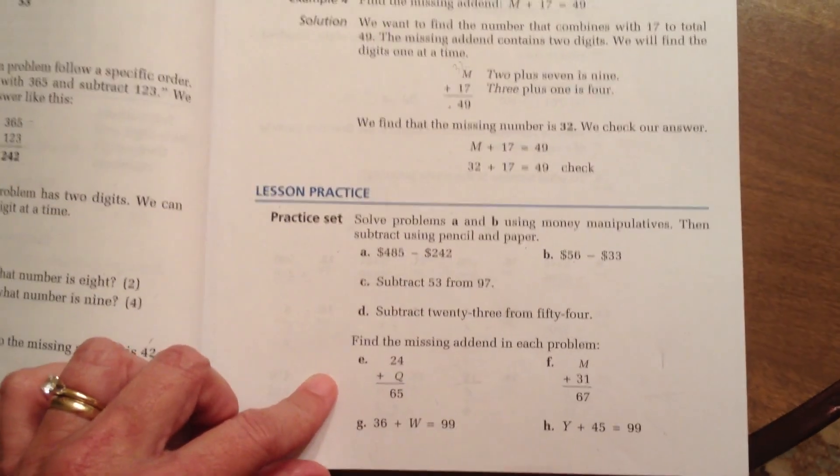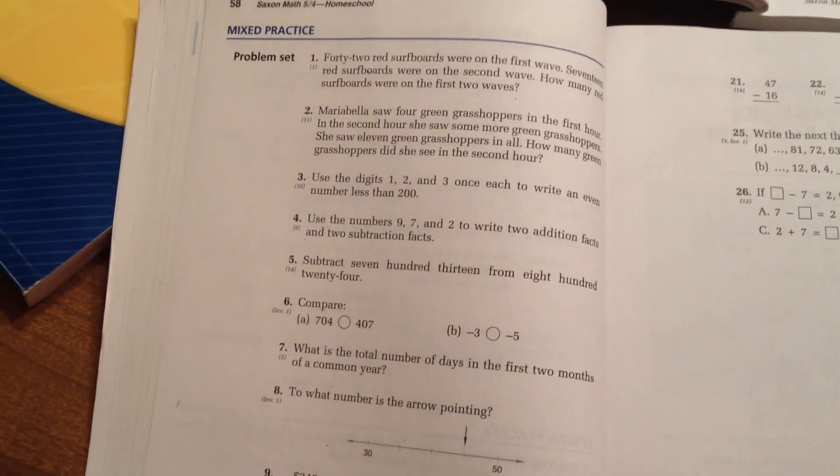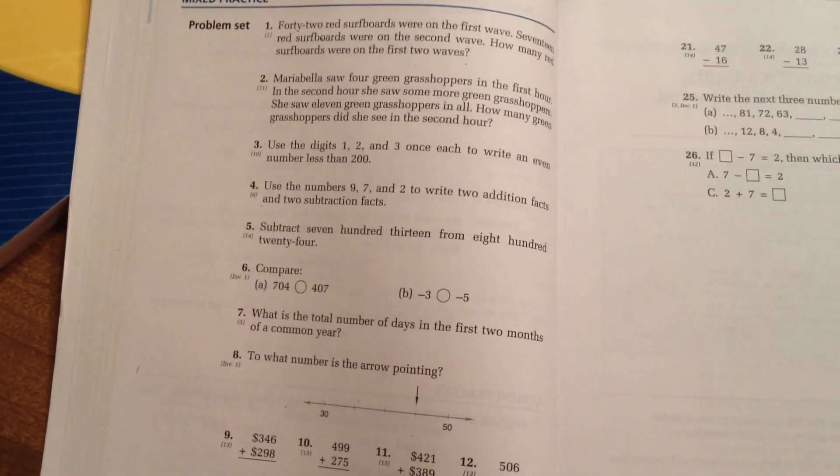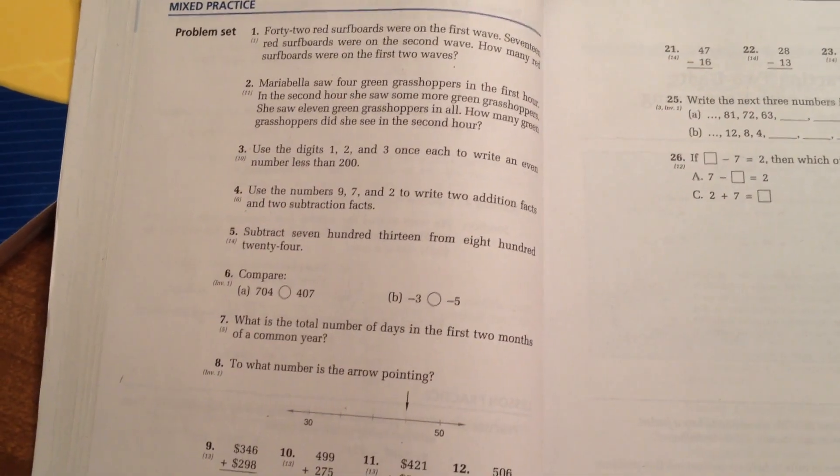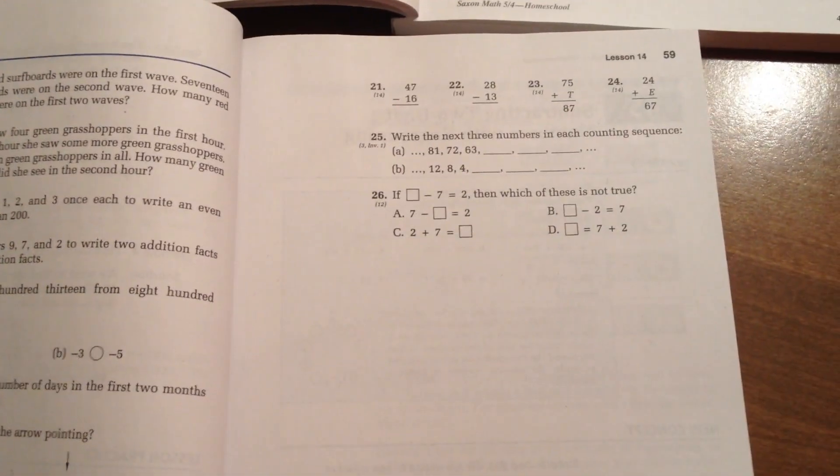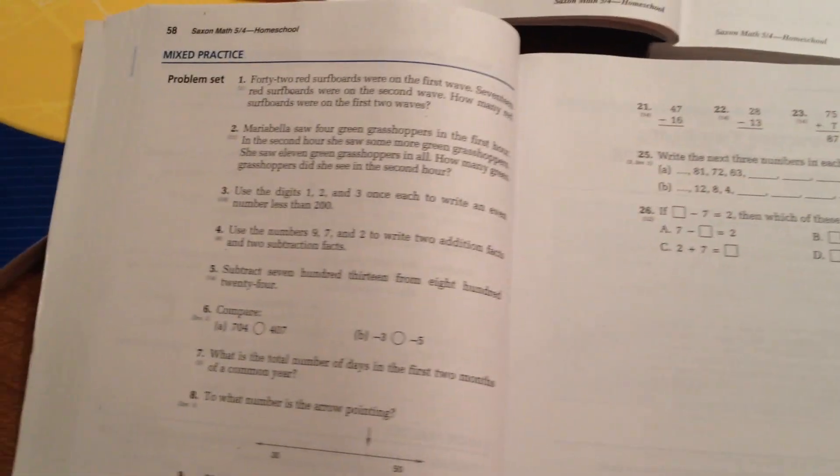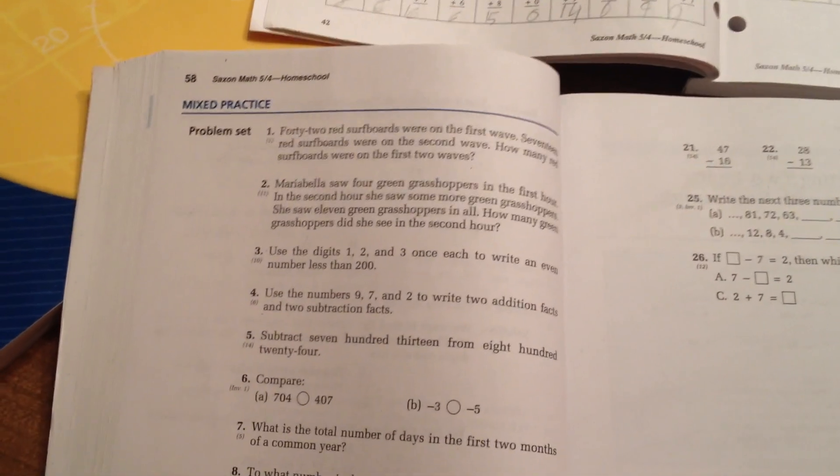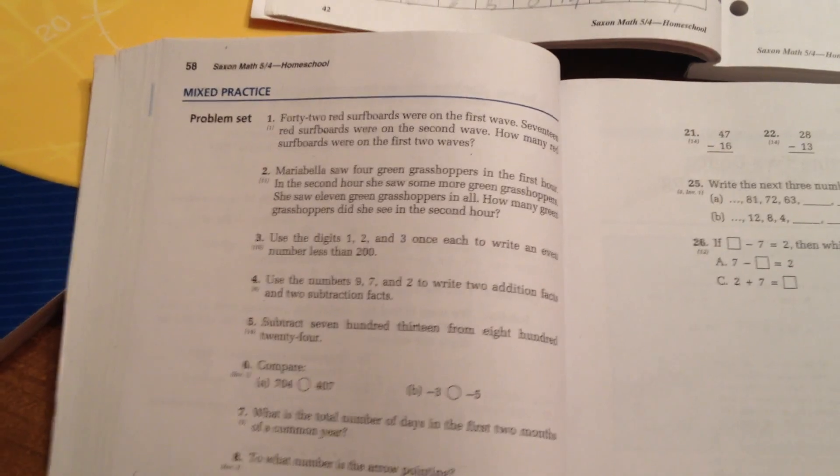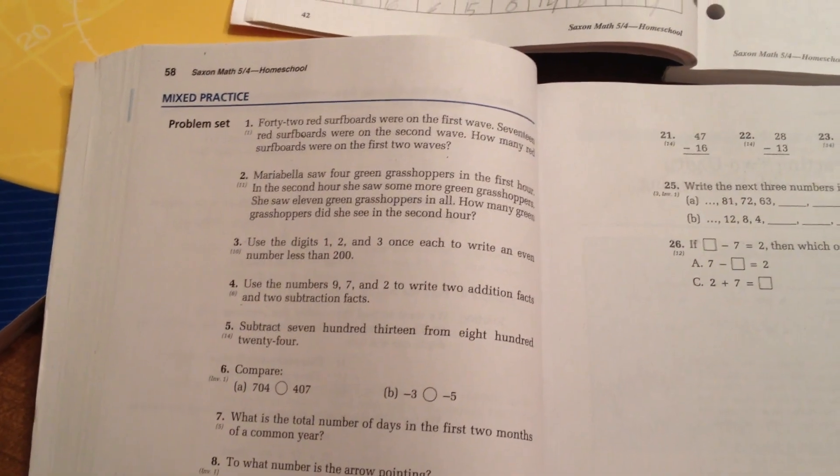And I will sit with him, and we sometimes work through these together. And then he completes the mixed practice problem set. Generally, there's about 25 or 26 of these. He completes all of these in his notebook. Once he has finished them, I grade them immediately. We correct any that he's missed, and I record his grade.